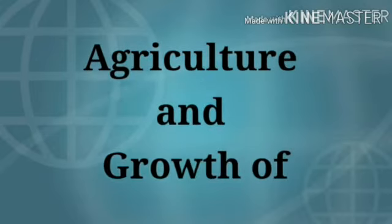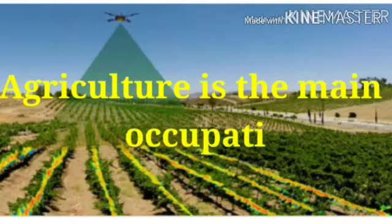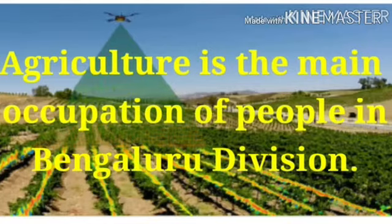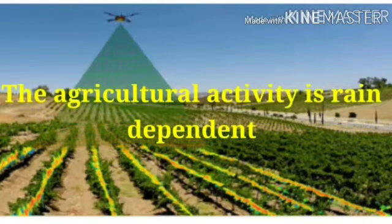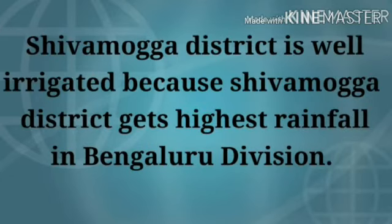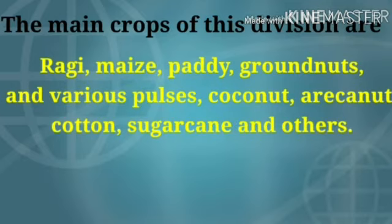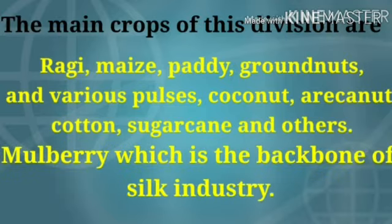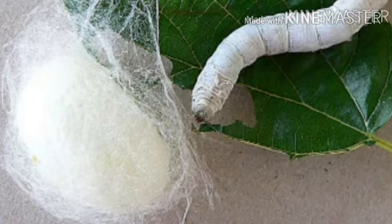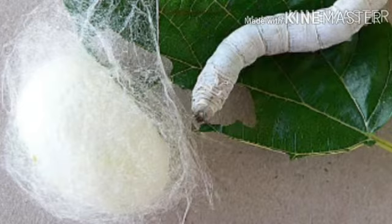Now let us study about agriculture and the growth of industries. Agriculture is the main occupation of people in Bengaluru division and the agricultural activity is rain-dependent. Shimoga district is well irrigated because it gets the highest rainfall. The main crops of this division are ragi, maize, paddy, groundnuts, various pulses, coconut, arecanut, cotton, sugarcane and others. Mulberry, the backbone of the silk industry, forms the basic food material for silkworms and is cultivated in Bengaluru and Ramanagara districts.